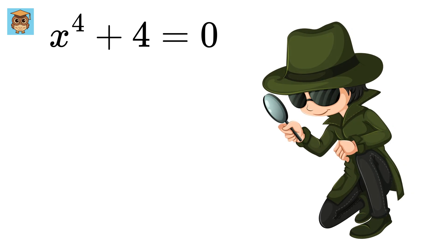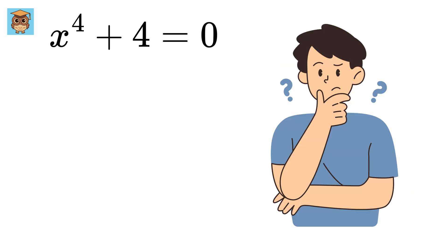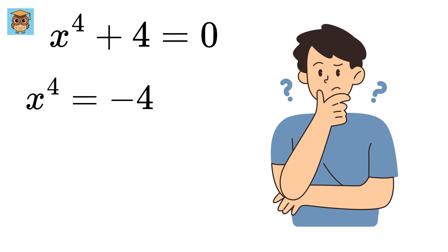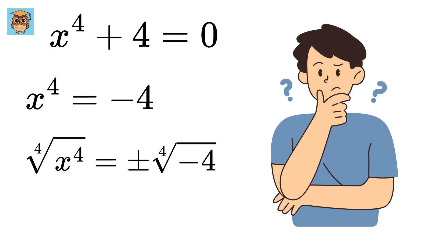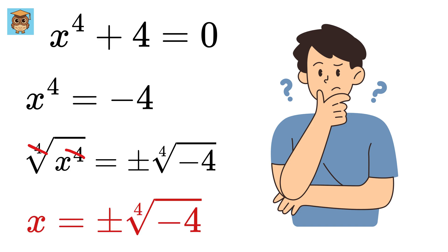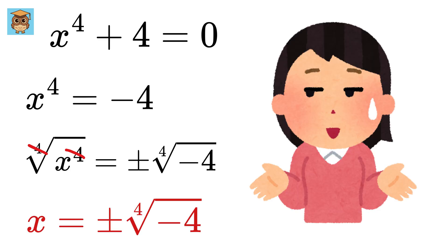After seeing this equation, you might be wondering if we can just take the 4 on the right-hand side to make it negative 4, and then simply take the fourth root on both sides. That way, this will get cancelled, and then we can add plus or minus here, and that's it. Right? Well, kind of. But there's a catch.